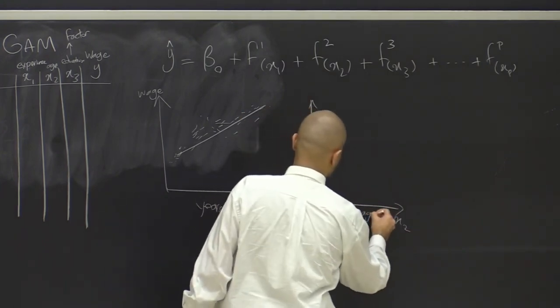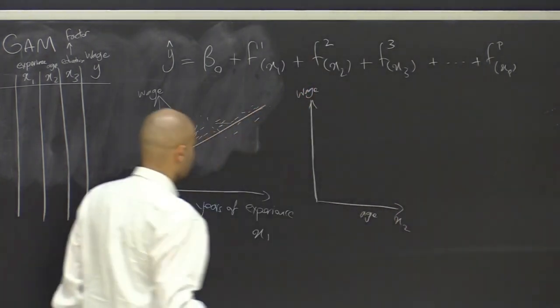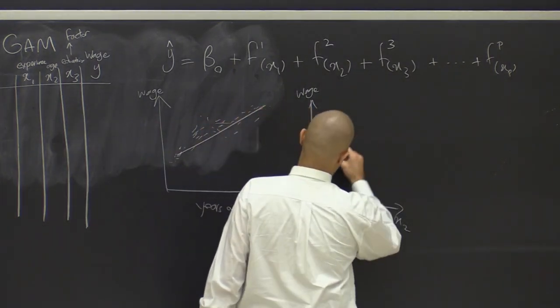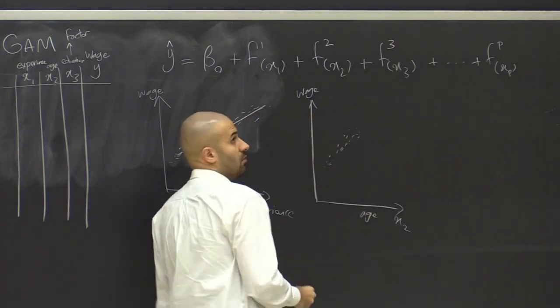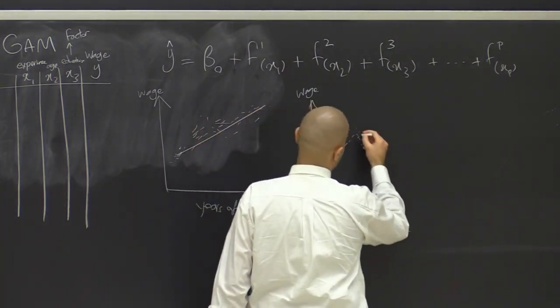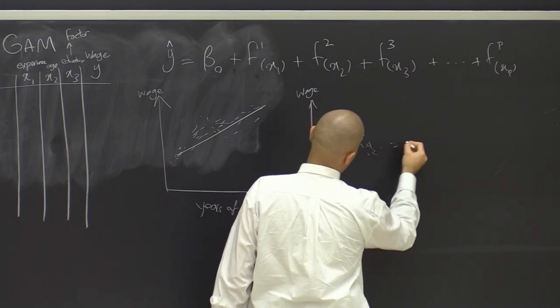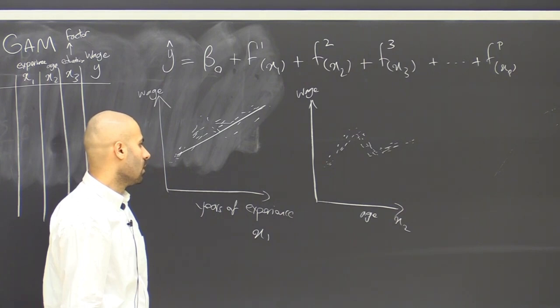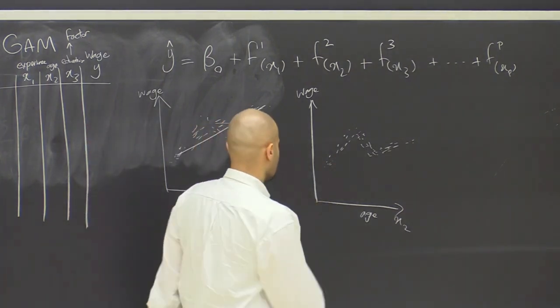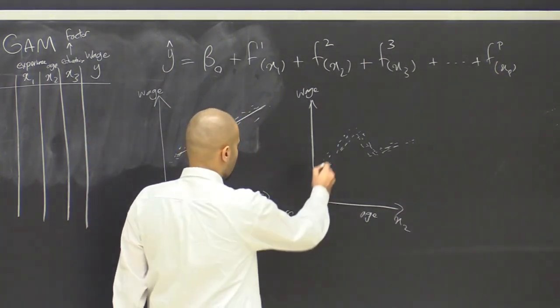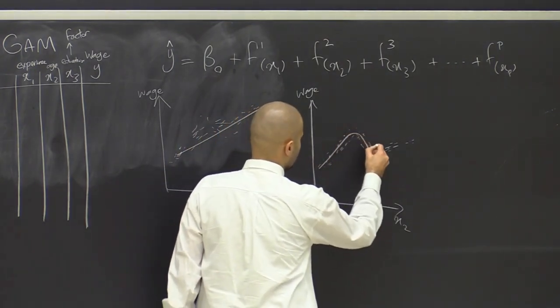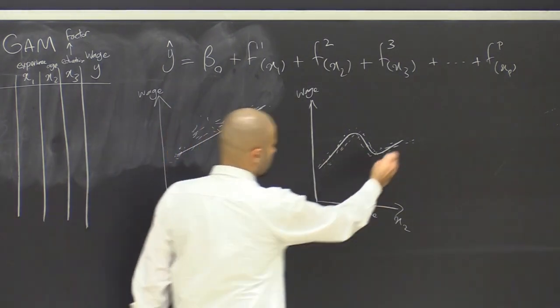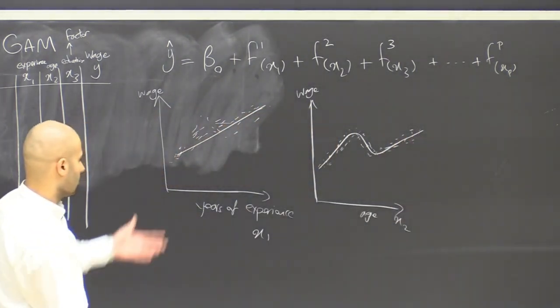Then for age, as the predictor, maybe the pattern is, maybe it increases sharply, then it decreases a bit, followed by another increase but not as sharp. So if the data looks like this, just from the change of sign, it seems like a polynomial of degree three could capture this nonlinear pattern. Here we have a drop somewhere in between. But the general pattern is that wage increases by age. Older people just have higher wage.